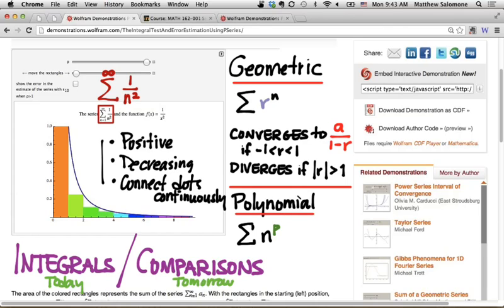We actually talked about this series on Friday and speculated on its convergence, but we didn't come to a conclusion that we could prove rigorously. The job today is to do that and then also to generalize, to figure out what we can say about polynomial series in general based on what the exponent in that polynomial happens to be.